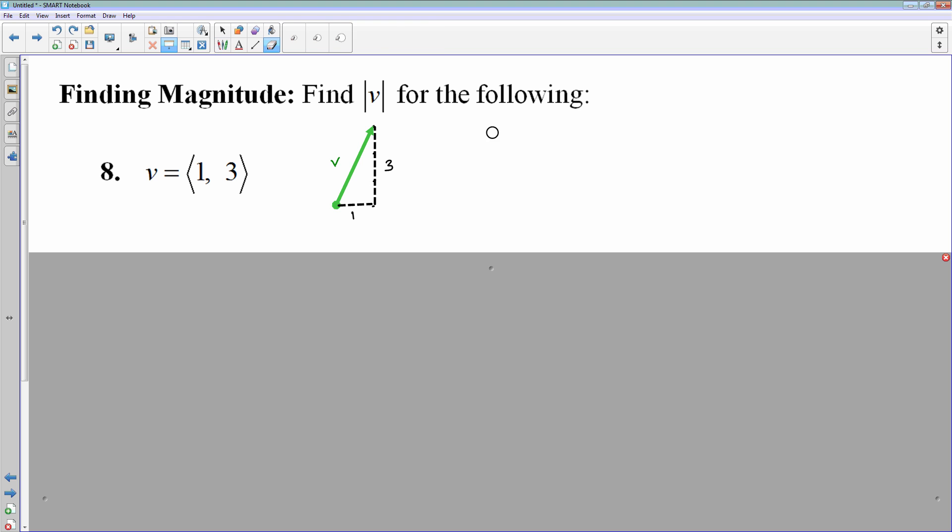Okay, I'll call it v. So v squared equals 1 squared plus 3 squared. v squared equals 1 plus 9, which equals 10. But then you have to take the square root, right? So the magnitude of v ends up being the square root of 10. And so that is your magnitude.